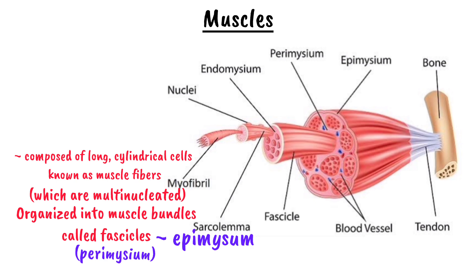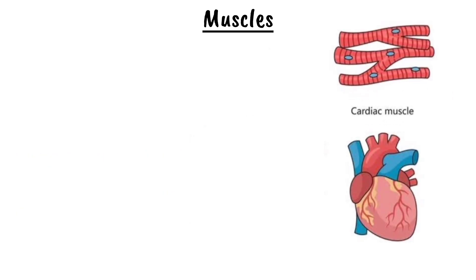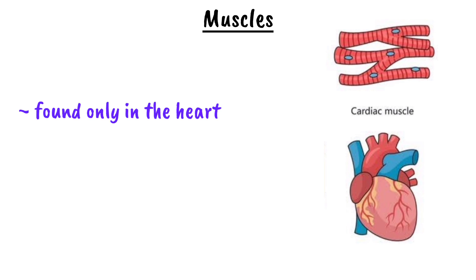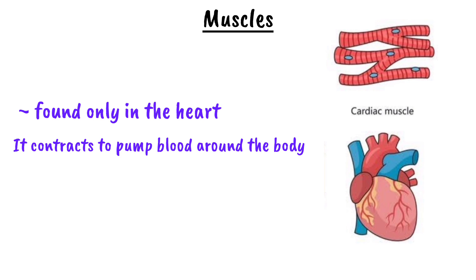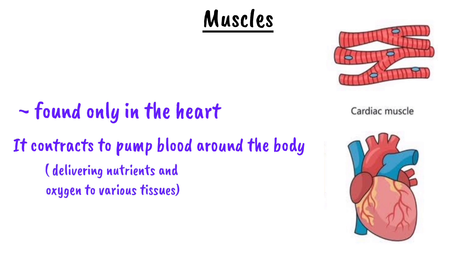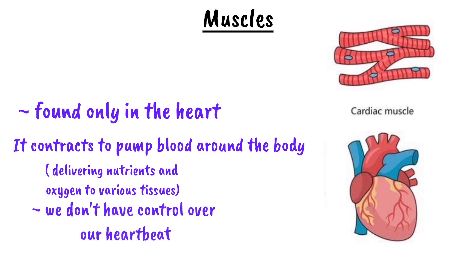Now this leads us to the cardiac muscle. As the name suggests, cardiac muscle is found exclusively in the heart. It plays a single yet crucial role, which is contracting to pump blood throughout the body, delivering oxygen and nutrients to various tissues. Unlike skeletal muscles, cardiac muscle operates involuntarily, meaning we do not have conscious control over our heartbeat.